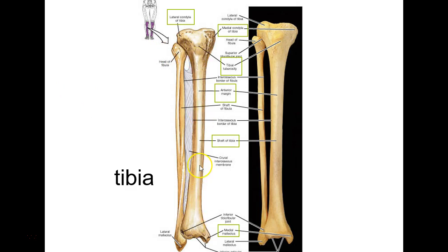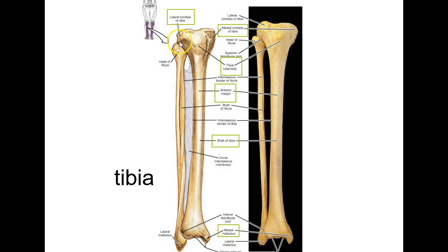Now we're headed down to the tibia — the large weight-bearing bone in your lower leg. Technically this region is the 'leg' and the upper region is the 'thigh,' but we'll say lower leg for convenience. The tibia has a medial and a lateral condyle. Down at the ankle on the inside is the medial malleolus, confirming which side is medial.